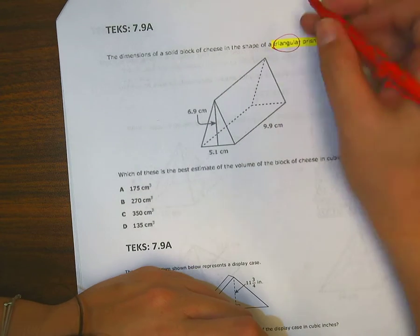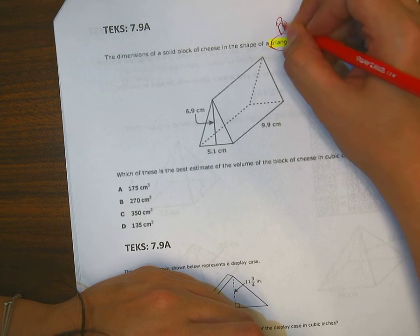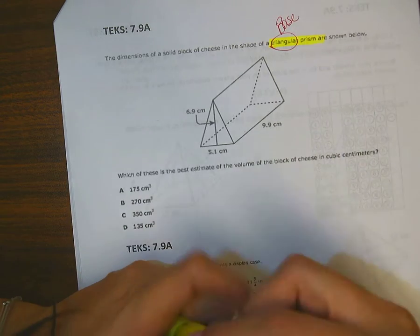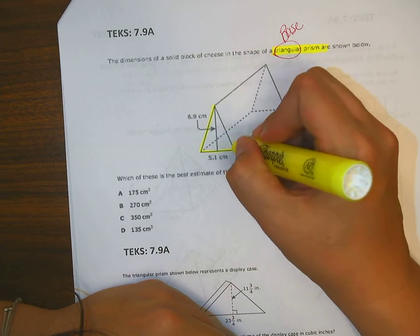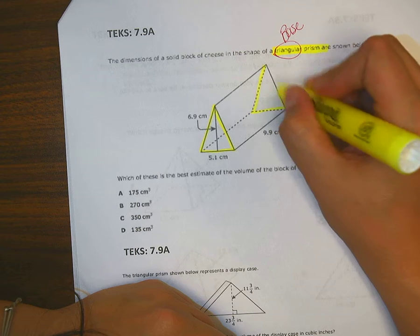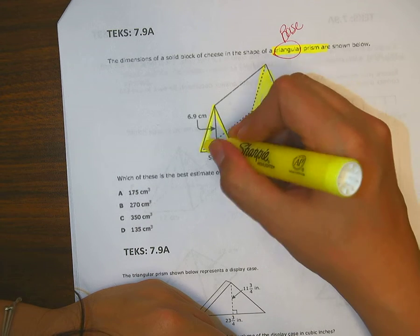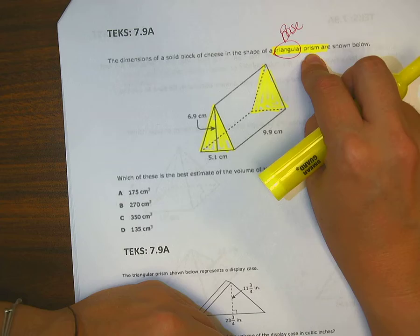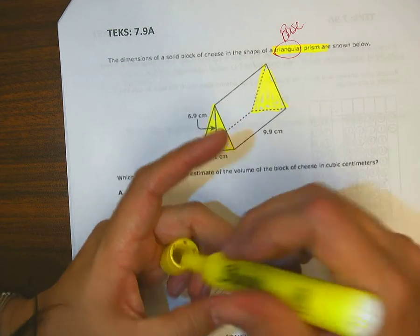This name automatically tells me that that is the shape of my base. So looking at my picture, I immediately go ahead and I'm tracing or shading in my bases. I know that there should be two of them because it's a prism and I know that they should be opposite and equal.